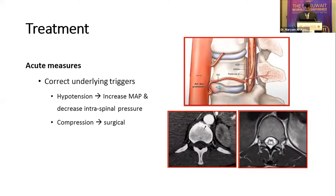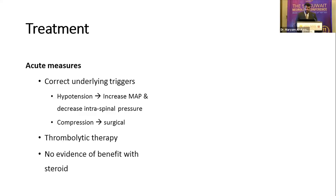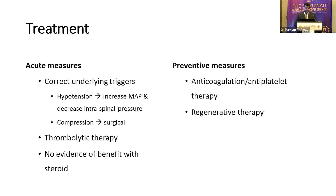For thrombolytic therapy in spinal cord infarction, there are at least 13 case reports and case series but no randomized controlled trial. Most reported favorable outcomes with no severe complications, so it remains a possibility in the right clinical setup. Steroids have no evidence of benefit in arterial ischemia of the spinal cord. For patients with vascular risk factors, preventive therapy similar to cerebrovascular and coronary artery disease management is reasonable. Regenerative therapy is still in the trial phase.